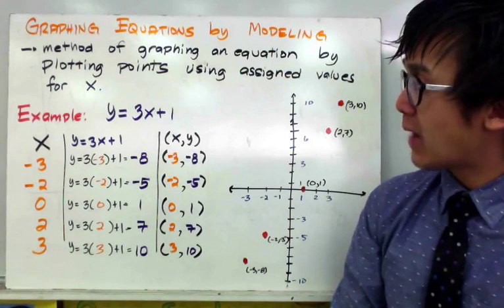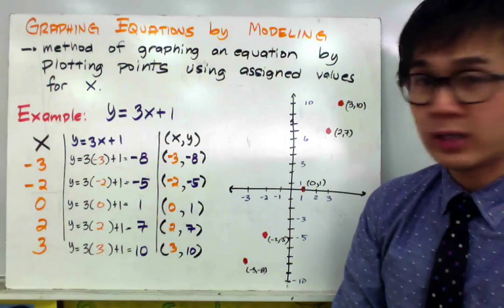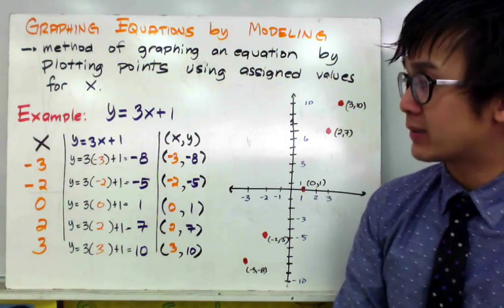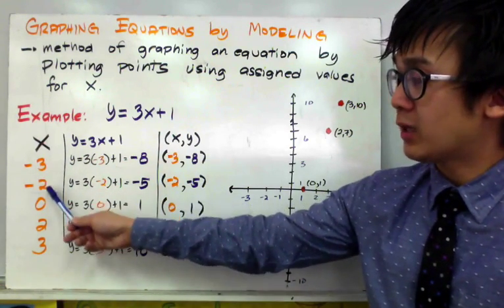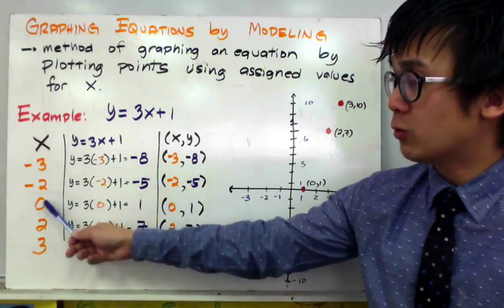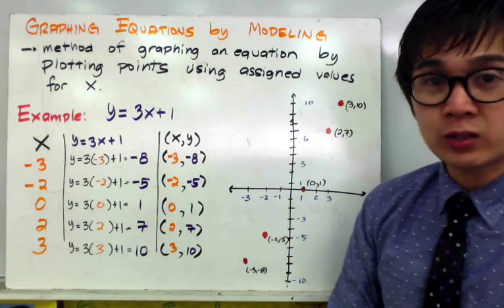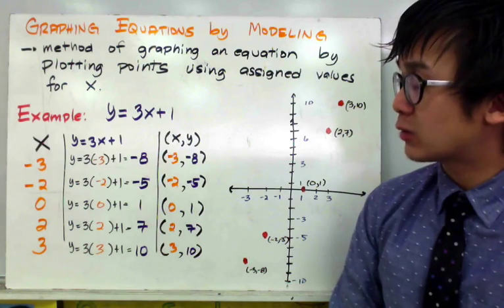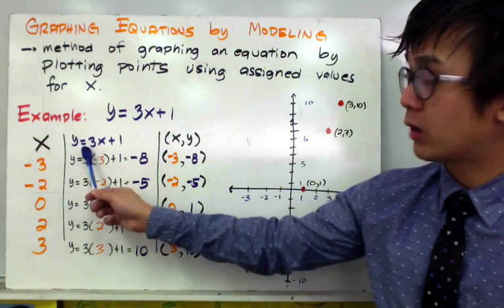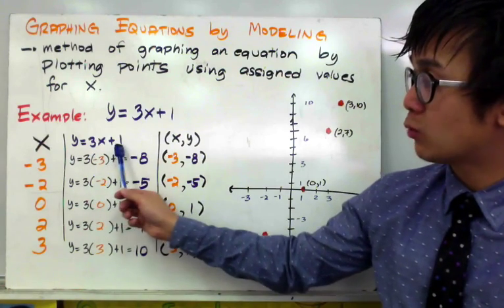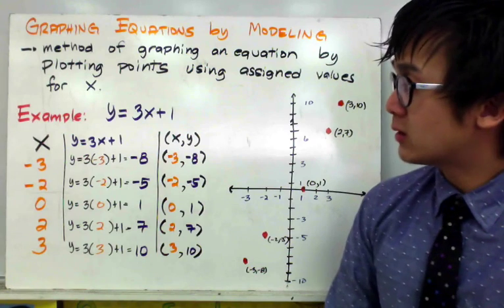In our first example, we have y equal to 3x plus 1. In this function, we will assign the values for x. The x values assigned here are negative 3, negative 2, 0, 2, and 3. The x values are assigned, and the y values we need to find will be determined by substituting the value of x into our equation y equal to 3x plus 1.